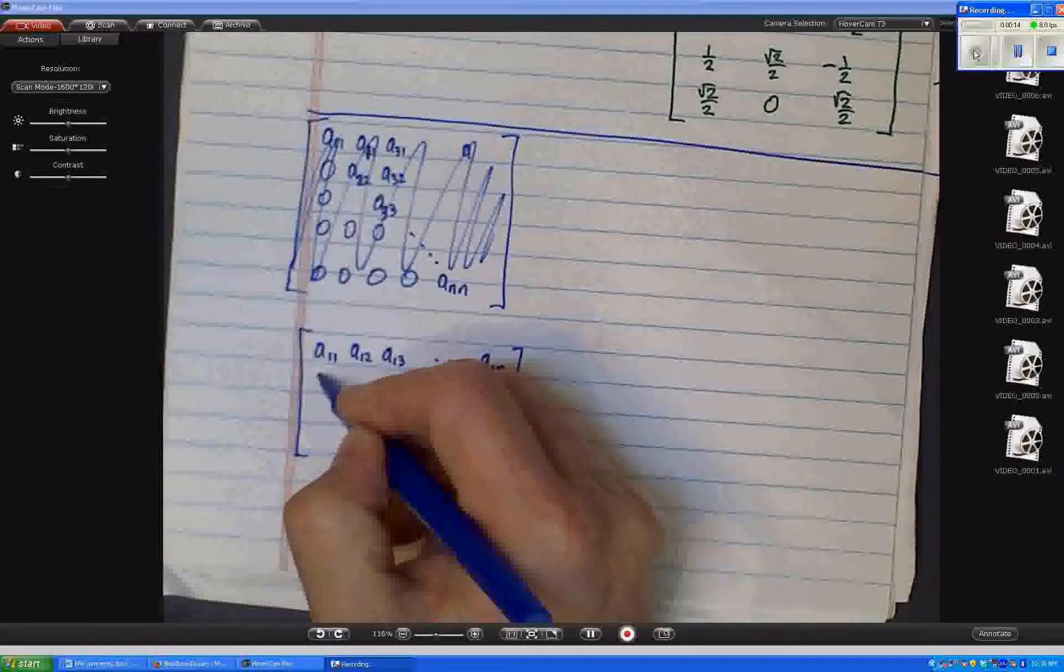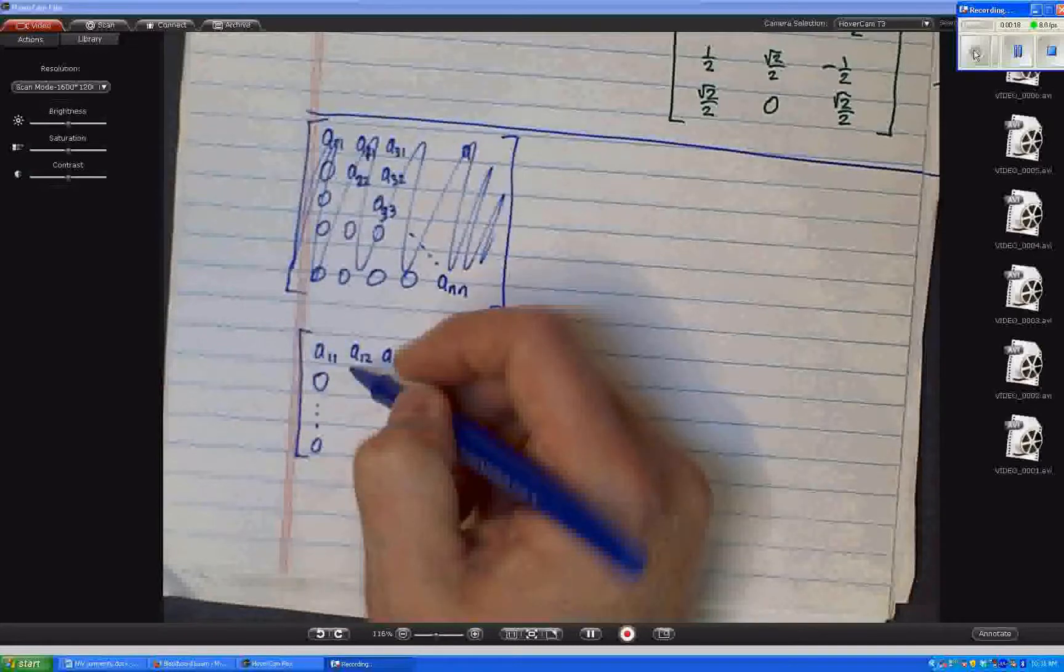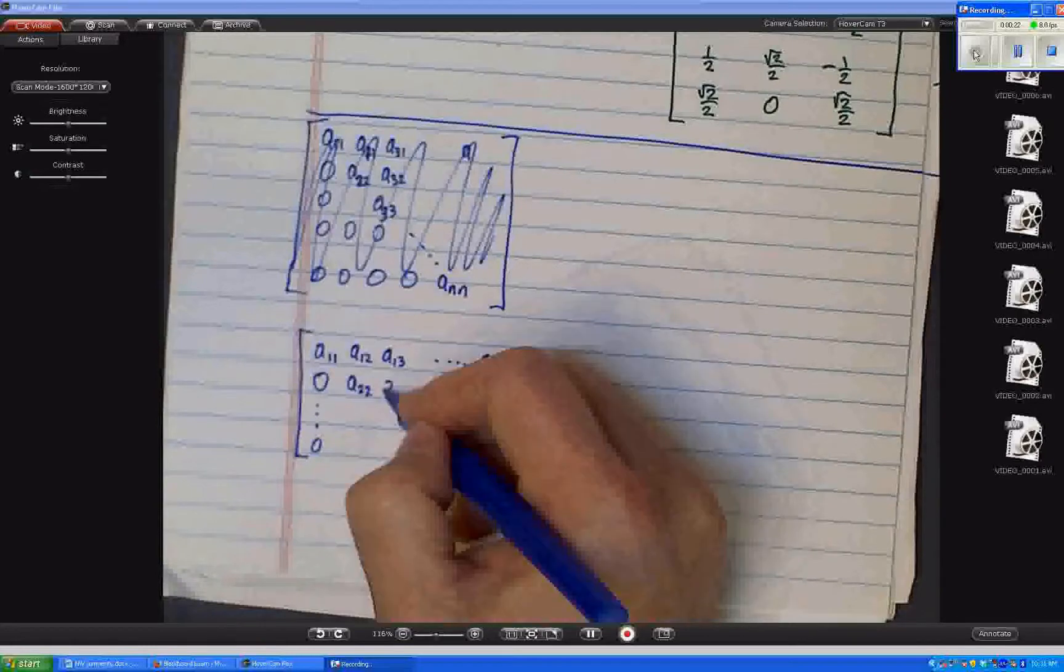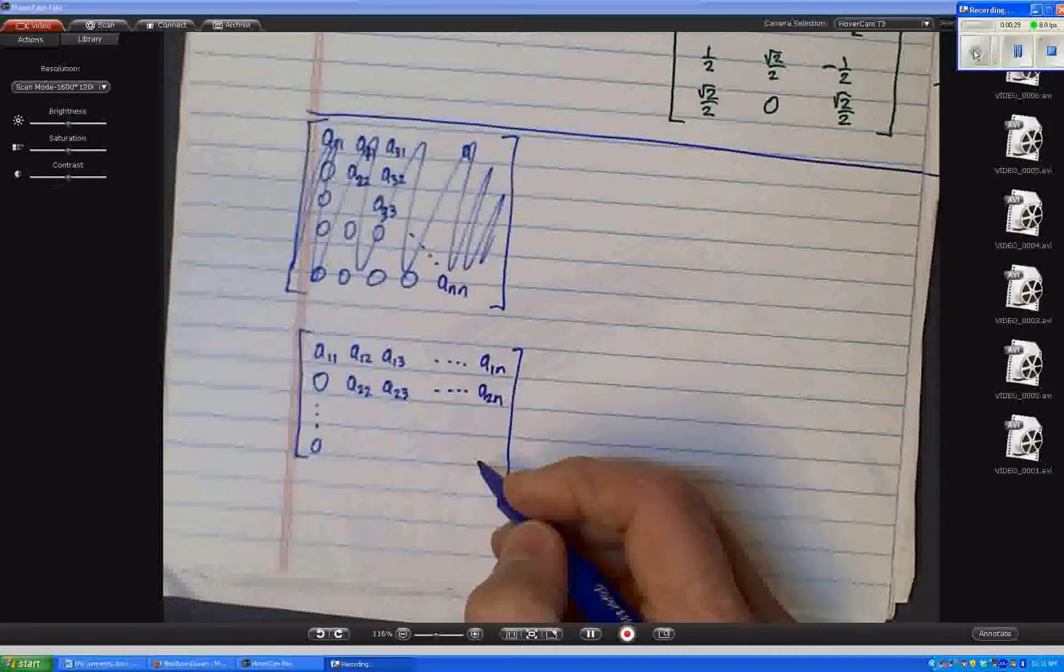And then since it's upper triangular, I have a 0 all the way below A11. But A22 might not be 0. A23, here's A2N. So that's the second row.